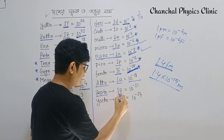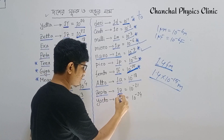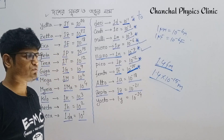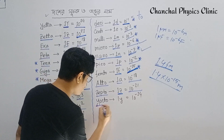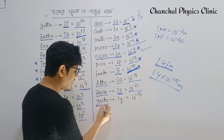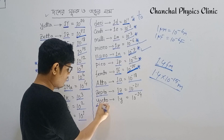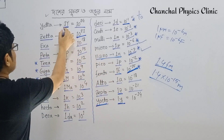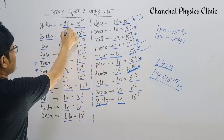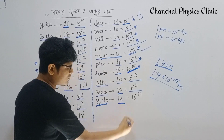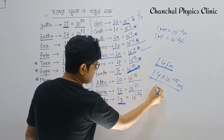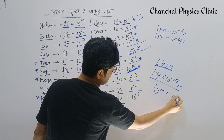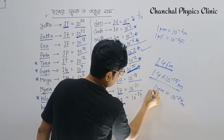Atto is 10 to the power minus 18. And Yocto, represented by the letter Y, is 10 to the power minus 24. So 1 Yoctometer is 10 to the power minus 24 meters — this is the minimum unit.